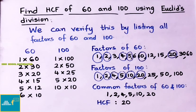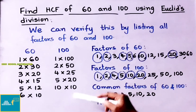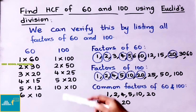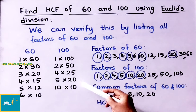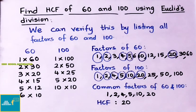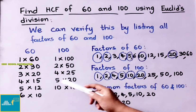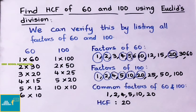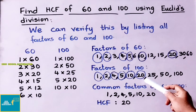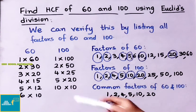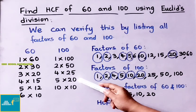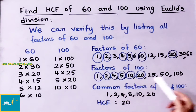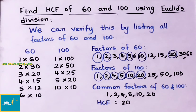Next, factors of 100: 1×100, 2×50, 4×25, 5×20, 10×10, and in reverse: 20×5, 25×4, 50×2, 100×1. So the factors of 100 are: 1, 2, 4, 5, 10, 20, 25, 50, and 100.